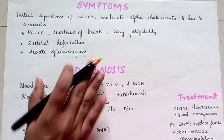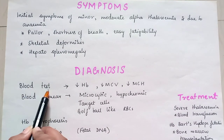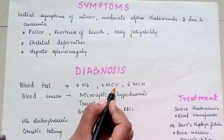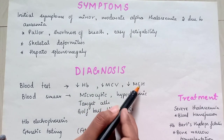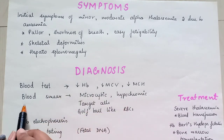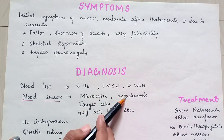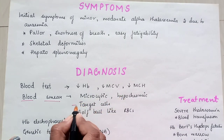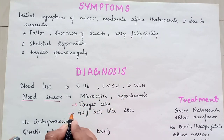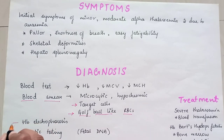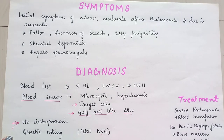Now we come to the diagnosis. In blood tests, there is decreased hemoglobin concentration, decreased mean corpuscular volume, and decreased mean corpuscular hemoglobin. In blood smear, the cells are microcytic and hypochromic in nature. We can also see target cells and golf ball-like RBCs. The gold standard test to determine alpha thalassemia is hemoglobin electrophoresis, and genetic testing can be done in the womb.